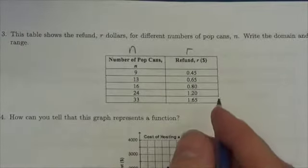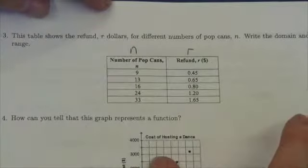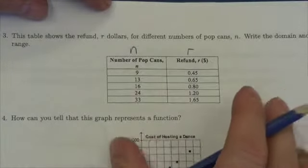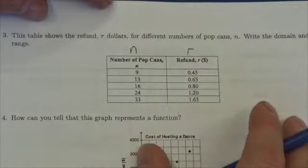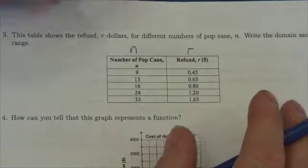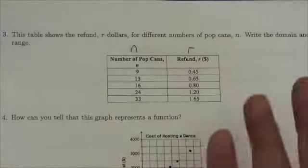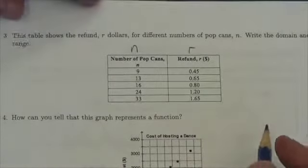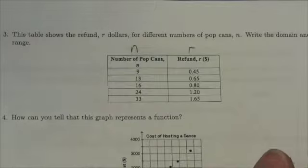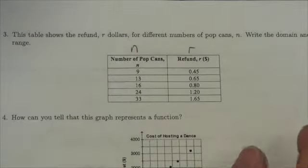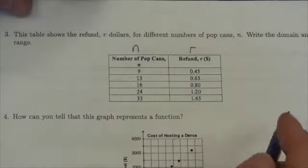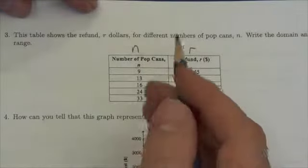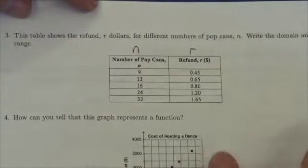First of all, before I can answer this question I need to identify my independent and my dependent variables, because independence and dependence relate directly to domain and range. Domain is about the independent variable, range is about the dependent variable. And actually I'm going to come back to those concepts pretty solidly in the next couple minutes here.